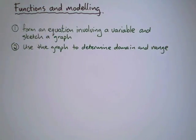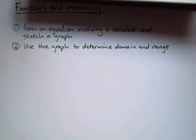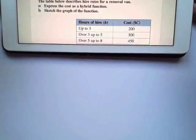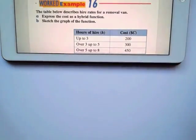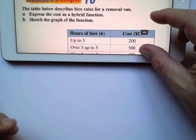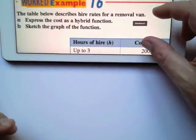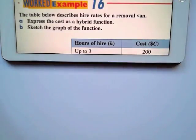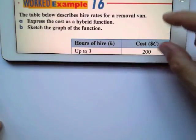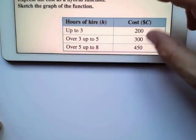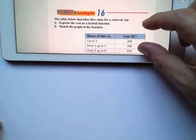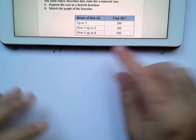So let's look at worked example 16. I'm going to see if I can fill it up here, because we need quite a bit of space. In this worked example, they ask us to express the cost as a hybrid function. So the table below describes hire rates for a removal van. Express the cost as a hybrid function, and then sketch the graph of this function. I'm going to make that smaller, and then I'm going to move it up so I can have a place to write.